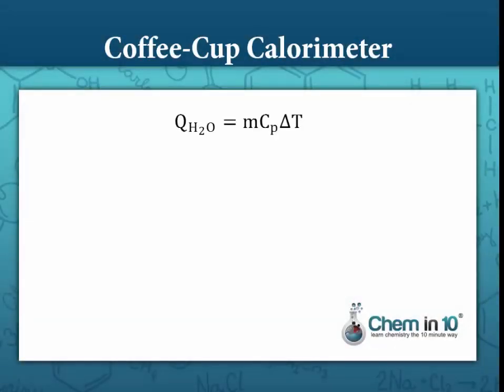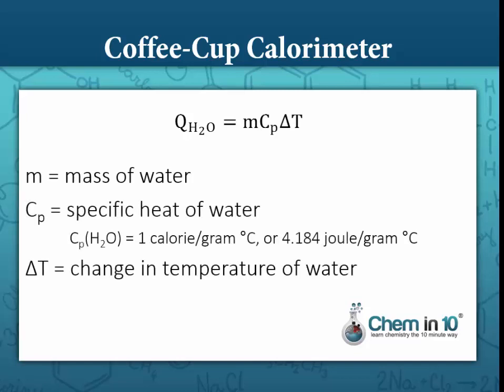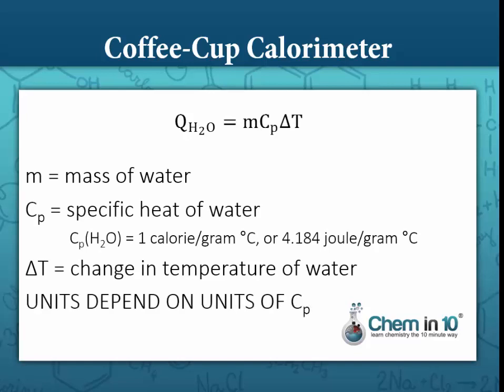We know from previous lessons that the heat gained or lost by water equals the mass of water times the specific heat times the change in temperature: Q = m × Cp × ΔT. This is how we figure out the Q of water in a coffee cup calorimeter. If using 1 calorie per gram degree Celsius, we get Q in calories; if using 4.184 joules per gram degree Celsius, we get Q in joules.